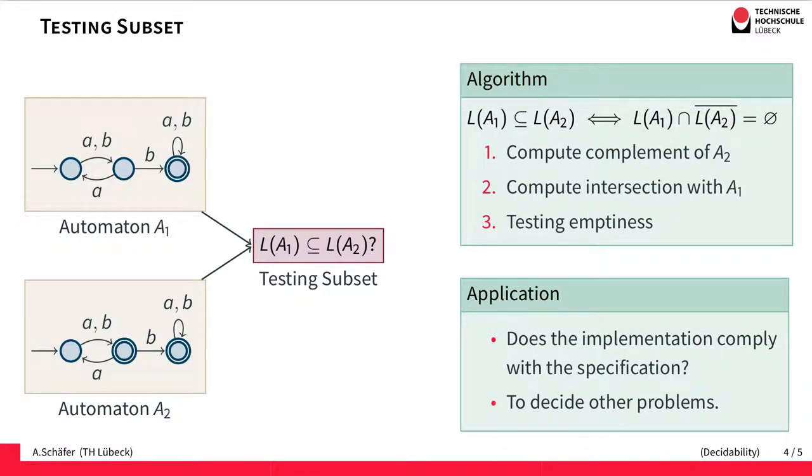After having found a method to test for emptiness we can use this method to check for subset. So test the subset condition. We'd like to know whether an automaton A1 defines a language that is a subset of the language of an automaton A2.